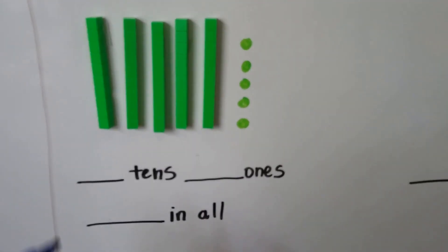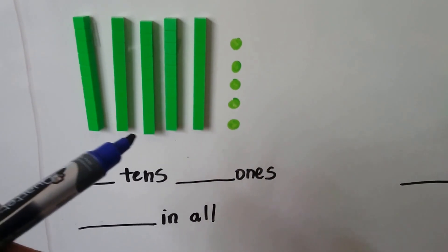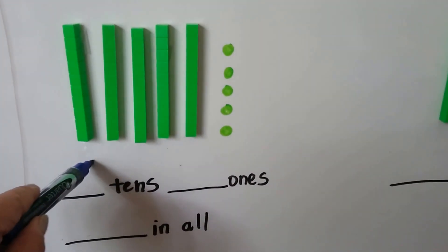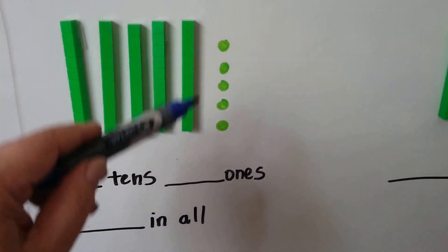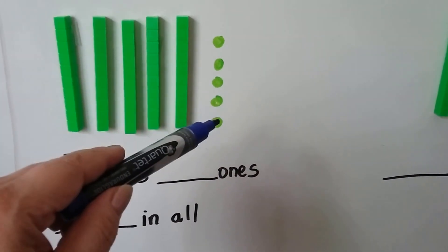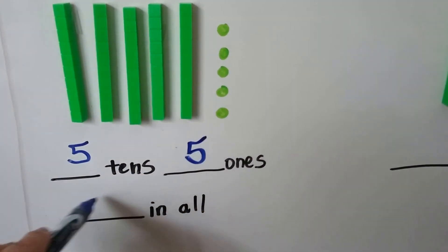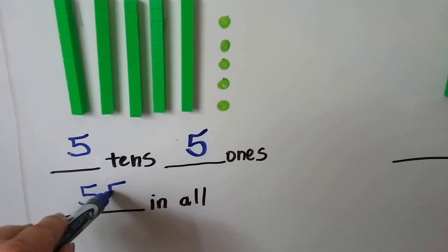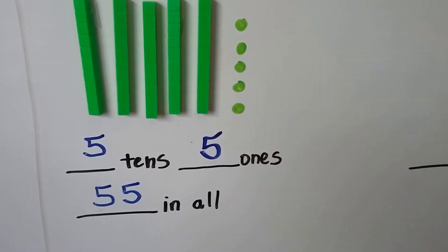How many tens do we see? One, two, three, four, five. How many ones do we see? One, two, three, four, five. We have five tens and five ones. We have 55 in all.